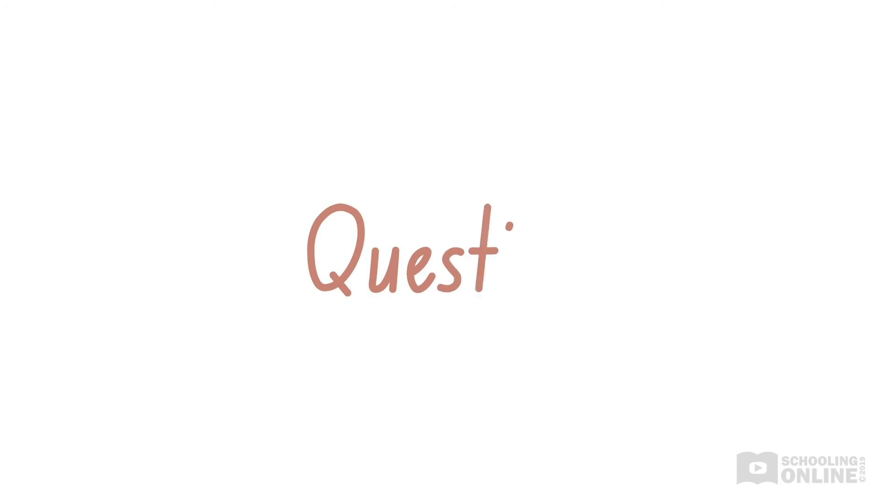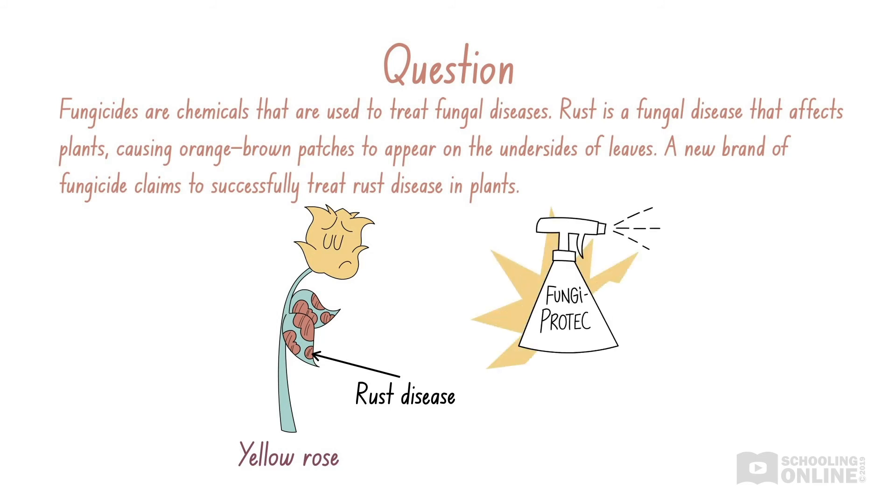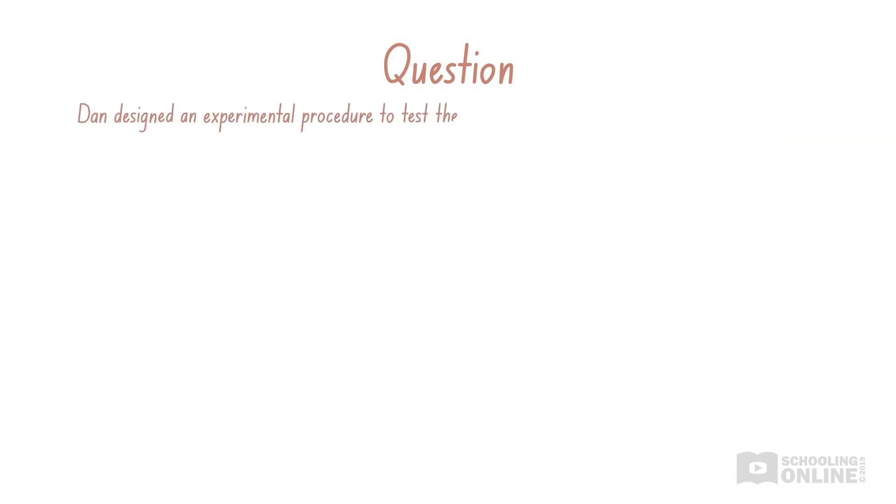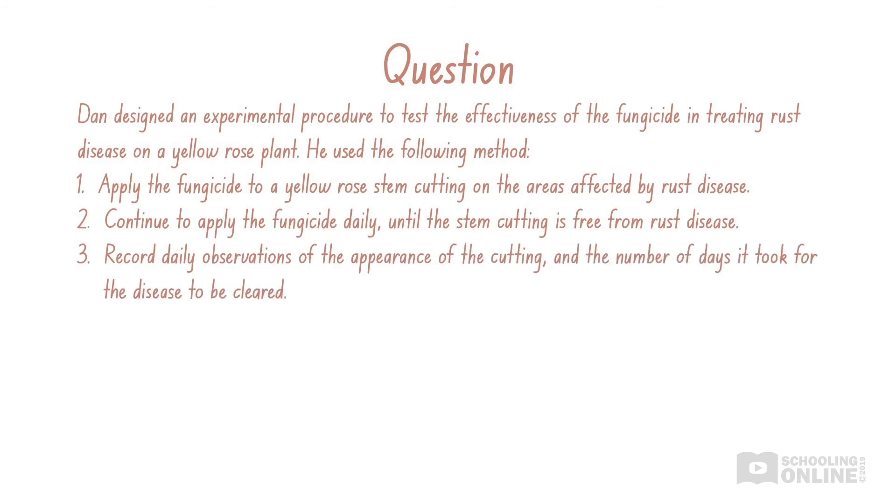Before we finish the video, let's look at a sample question. Fungicides are chemicals that are used to treat fungal diseases. Rust is a fungal disease that affects plants, causing orange-brown patches to appear on the undersides of leaves. A new brand of fungicide claims to successfully treat rust disease in plants. Dan designed an experimental procedure to test the effectiveness of the fungicide in treating rust disease on a yellow rose plant. He used the following method. Pause here to read the method for yourself.